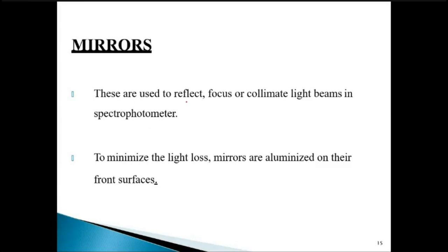After lenses come mirrors. The primary work of mirrors is to reflect UV or visible light — they are used to reflect, focus, and collimate light beams in the spectrophotometer. To minimize light loss, mirrors are aluminized on their front surfaces. If mirrors are aluminized at the back surface like normal mirrors at home, there is some loss of radiation due to reflection and absorption by the glass or quartz material. That is why front surfaces are mirrored.